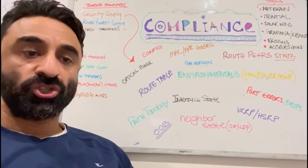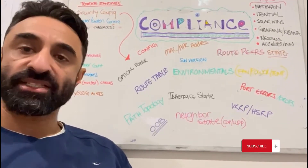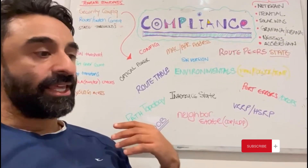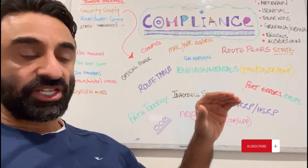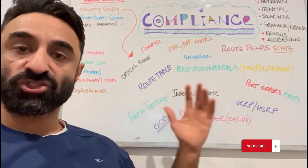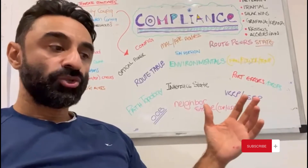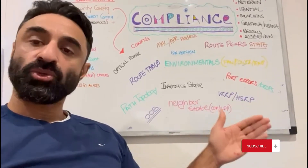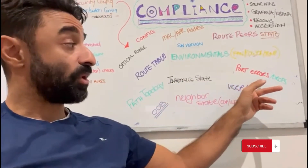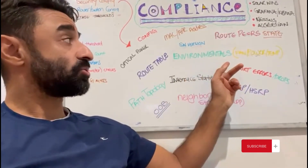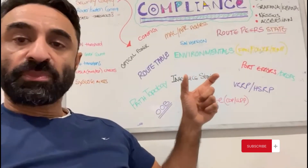To do that you need to have some tests running on the network. So what do you define as being compliant? For me there'll be a framework built around it, and one of the first things is ensuring you've got checks running across your network — which most people have — however, are you comparing those checks to a known good baseline? That's one of the most important things. Those checks would include port errors, drops, environmentals, and route peer state checks.